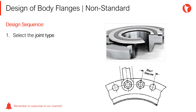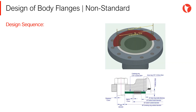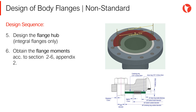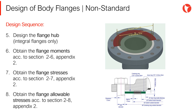First, select the joint type. Second, obtain the loads acting on the flange and bolts. Third, determine the number and size of the bolts. Fourth, obtain the bolt circle diameter. Fifth, design the flange hub for integral flanges only. Sixth, obtain the flange moment according to Section 2.6 of Appendix 2. Seventh, obtain the flange stresses according to Section 2.7 of Appendix 2. And eighth, obtain the flange allowable stresses according to Section 2.8 of Appendix 2. If the values of the induced stresses are higher than the allowable stresses, increase the flange thickness and recalculate.